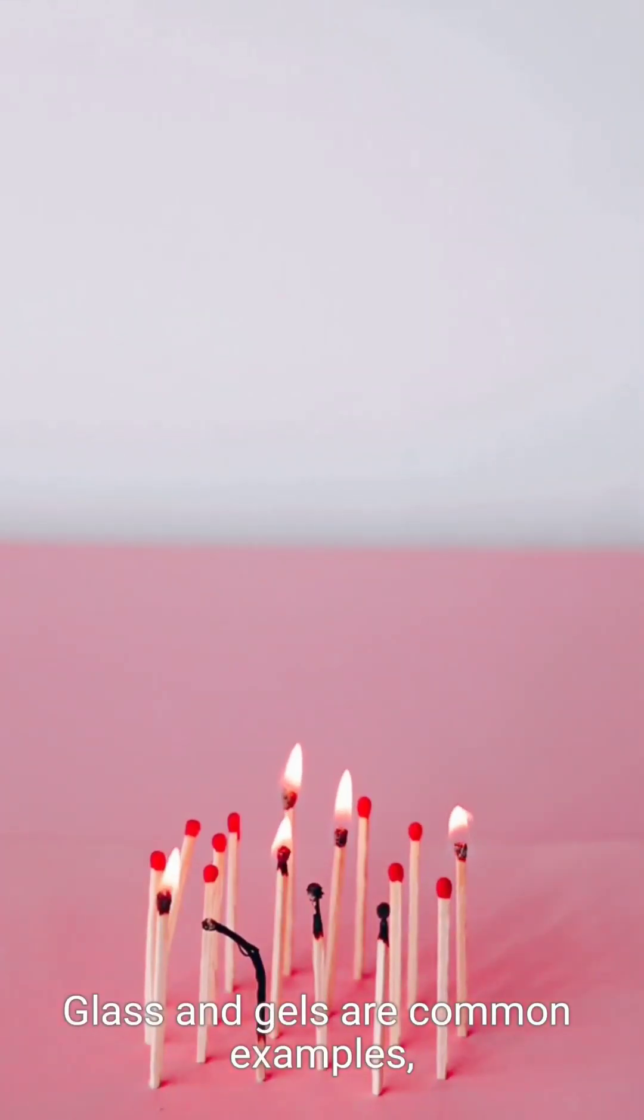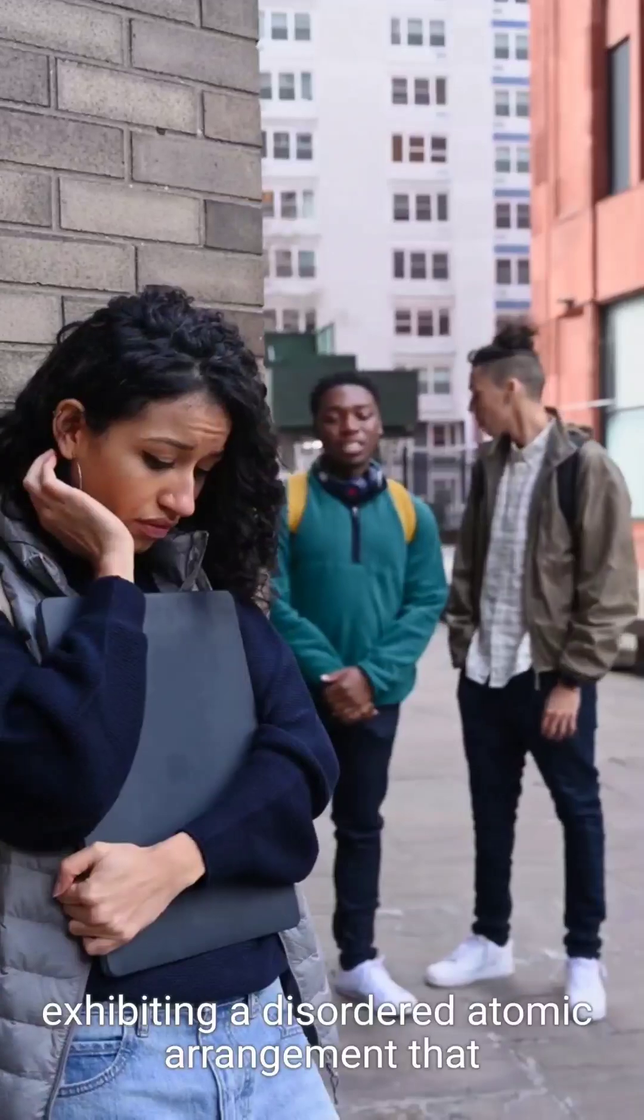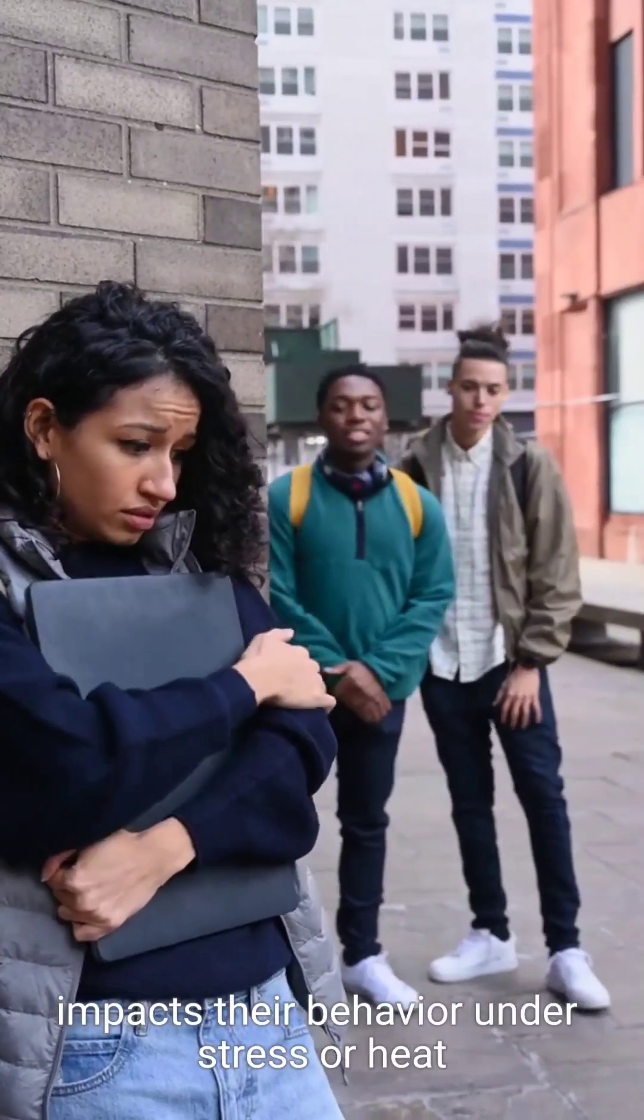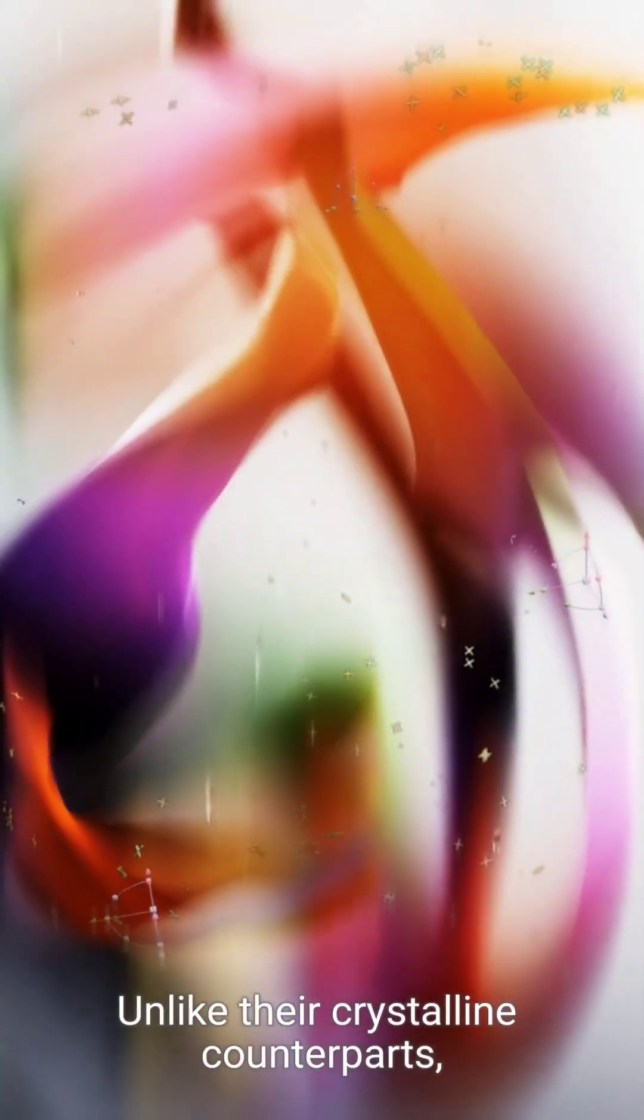Brass and gels are common examples, exhibiting a disordered atomic arrangement that impacts their behavior under stress or heat. Unlike their crystalline counterparts,